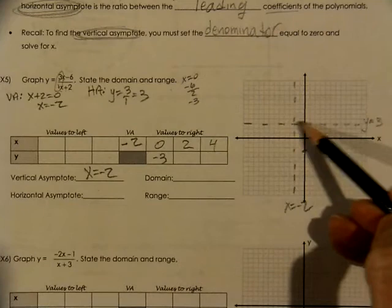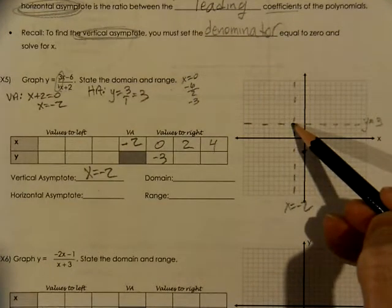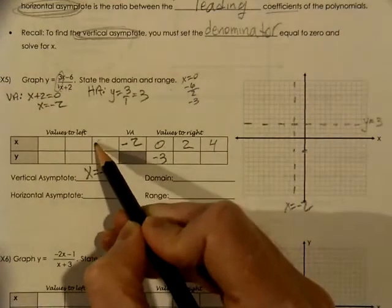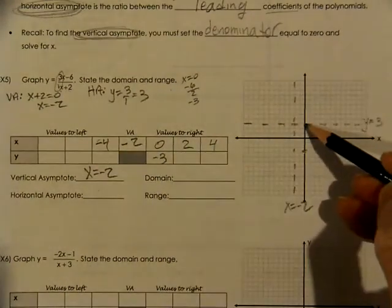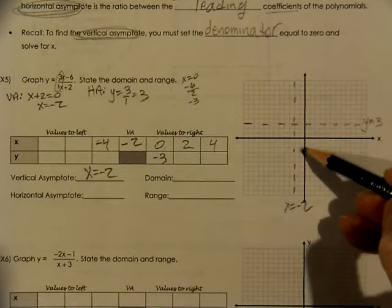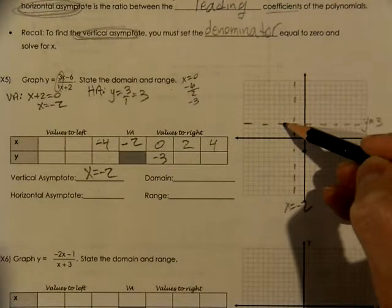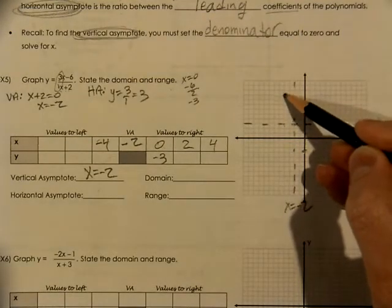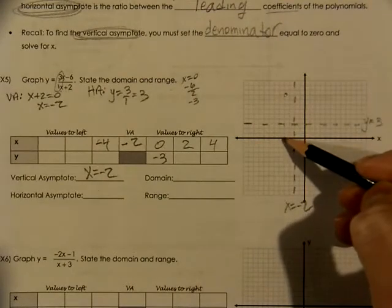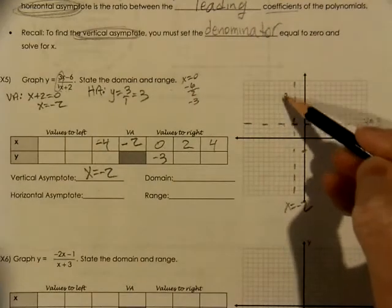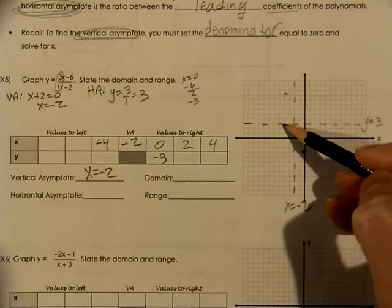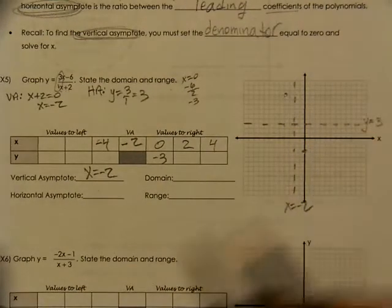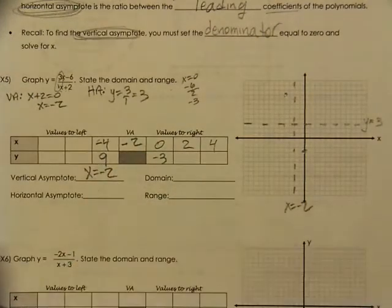That is two units from the asymptote, two to the right. So now we are going to go two to the left, which takes us to negative four. We had to go down six total from the asymptote, so we have to go up six total. That is a total of nine — six from the asymptote plus three to get back to counting from the x-axis. So that point is up at nine.